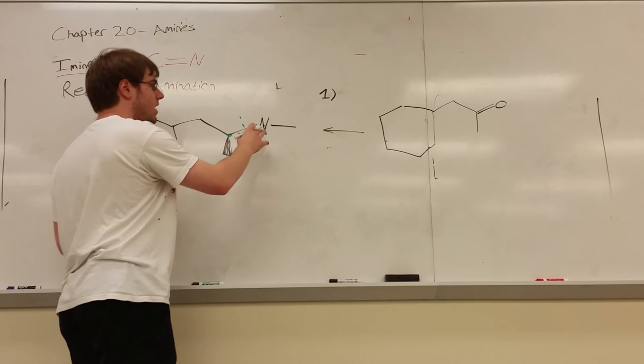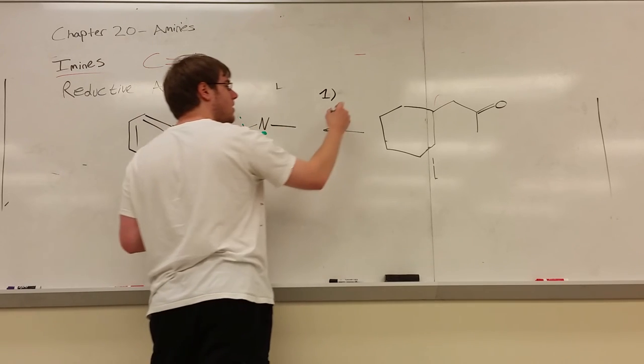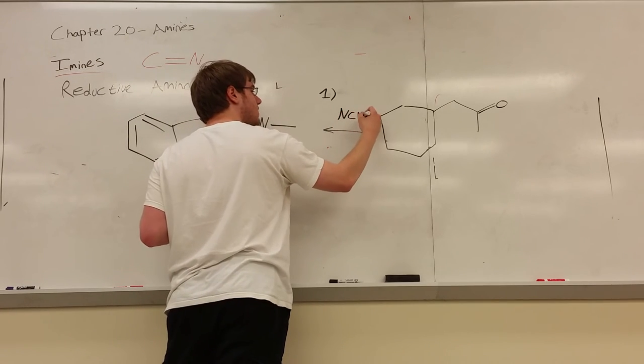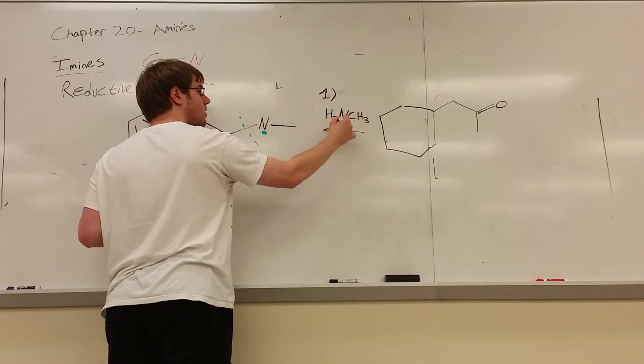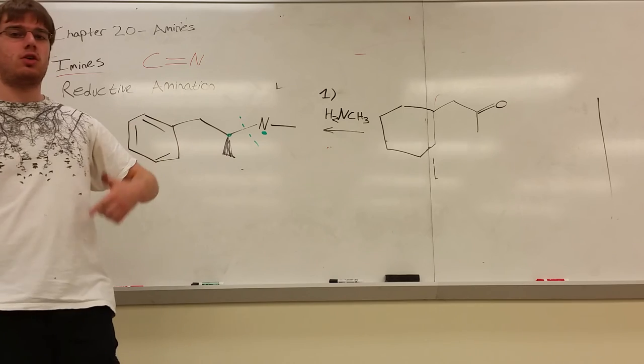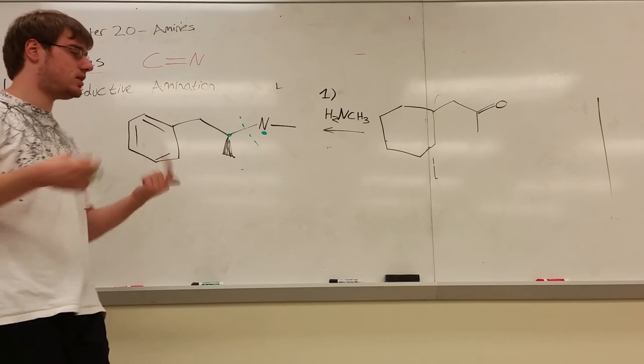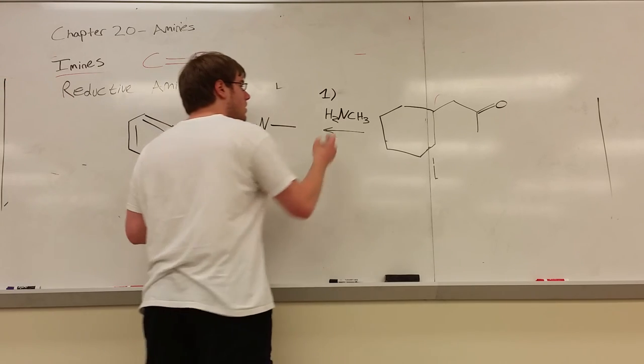Step one, the amine group that attacked, since we have nitrogen with a CH3 on it, it should be NCH3, and then I have to add two hydrogens, right? Because we want a nitrogen with three bonds, so it's neutral. NH2CH3, three bonds. That's step one.